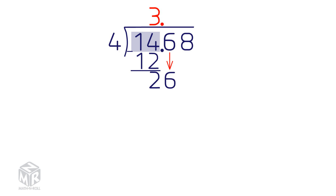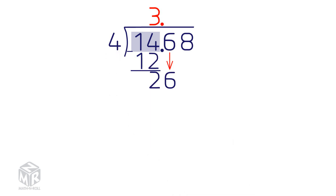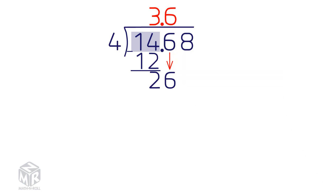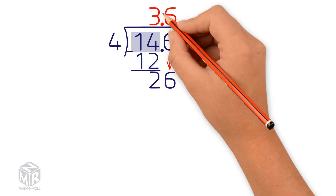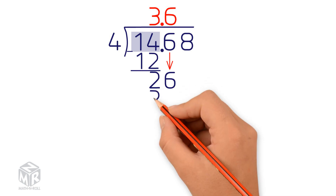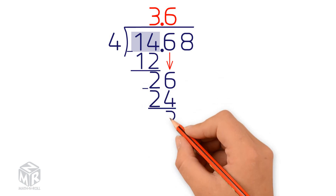Ask yourself how many times 4 goes into 26. 4 goes into 26 6 times, so we write the 6 directly above the 6. Multiply 4 by 6 and write the product directly underneath the 26. Now we subtract and we get 2.